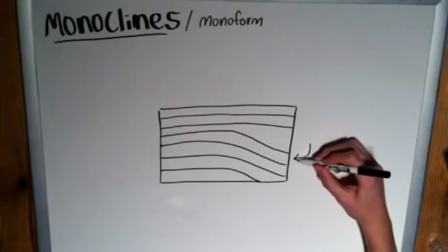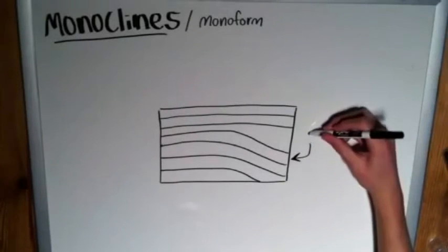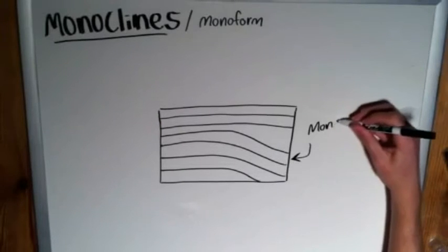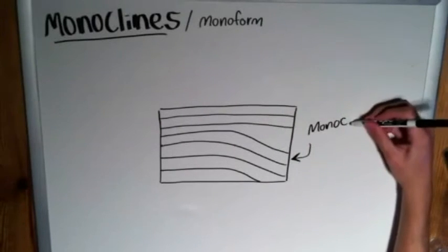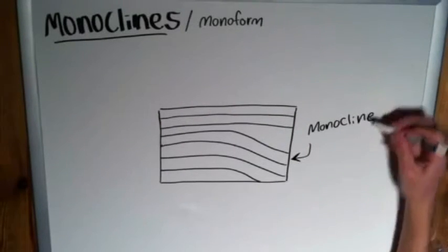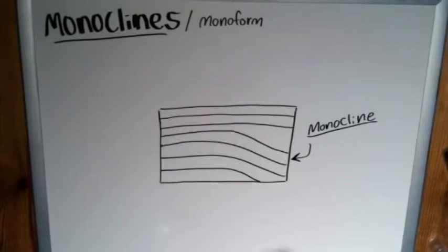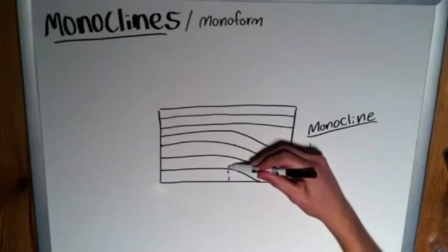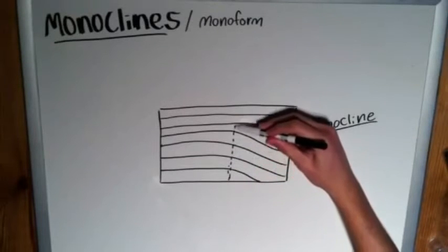These strata down here just start dipping all of a sudden. So what we're looking at is this piece right here. That's where our monocline is. I guess I just drew those two layers up here to put this in sort of context. But the monocline is what we're interested in. And that's right here, where they begin to start to dip.